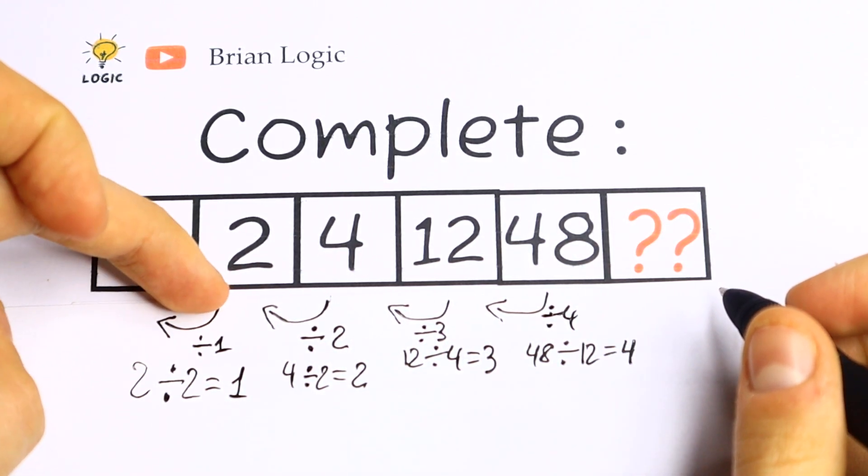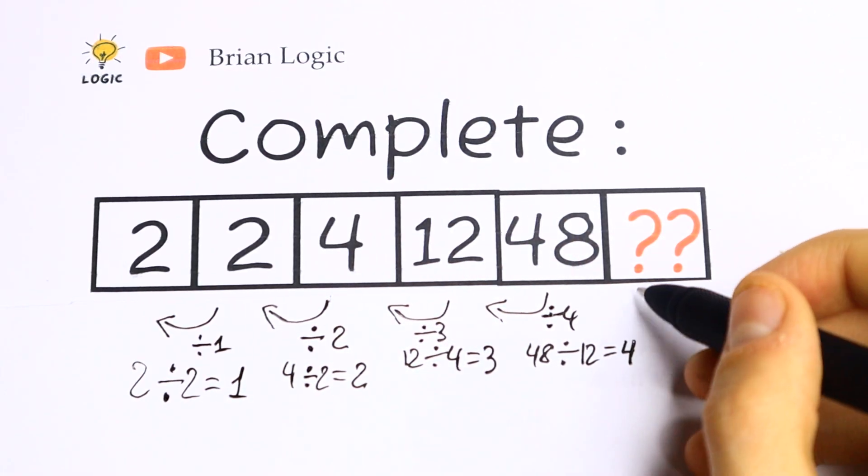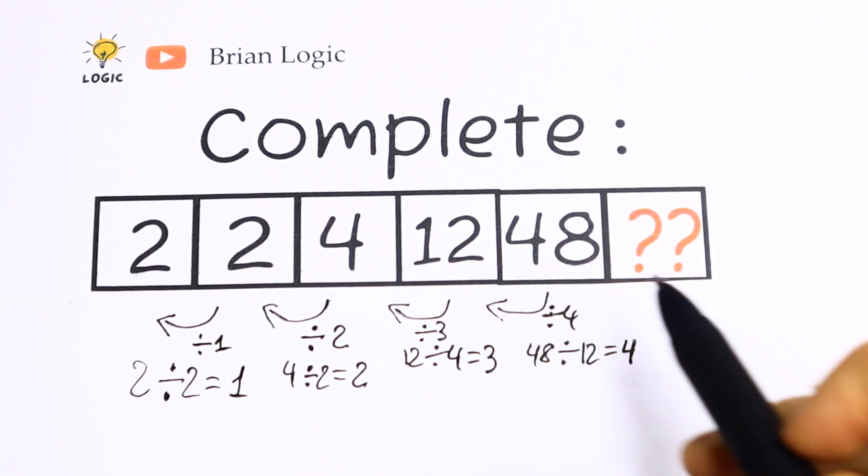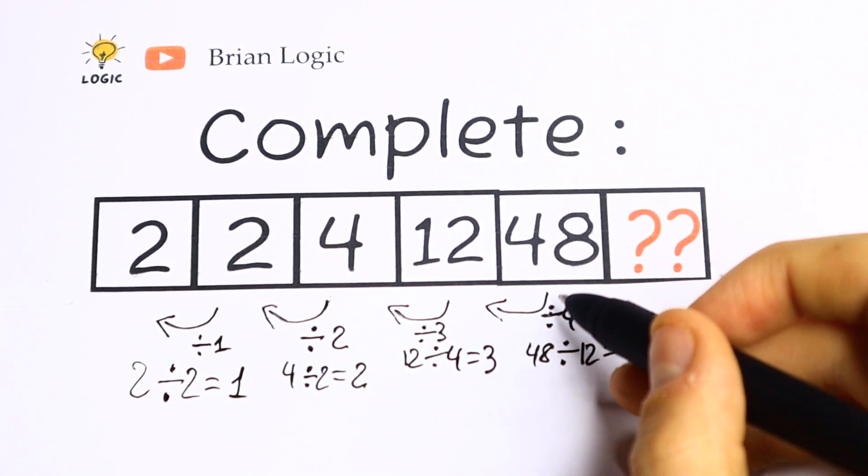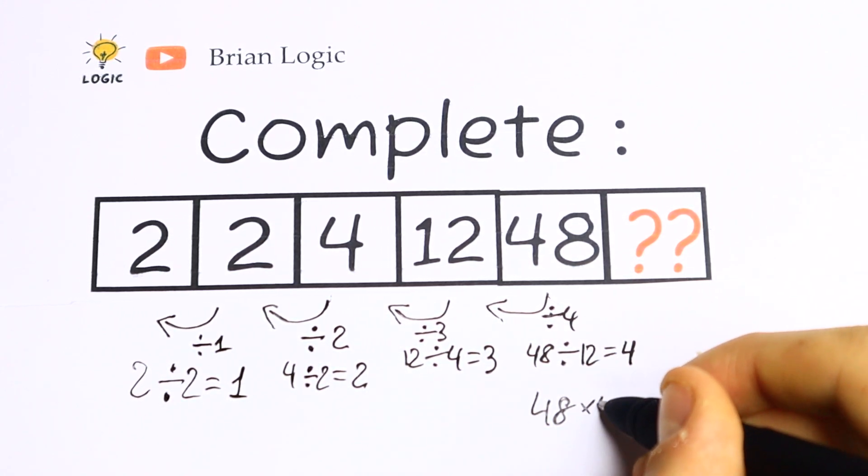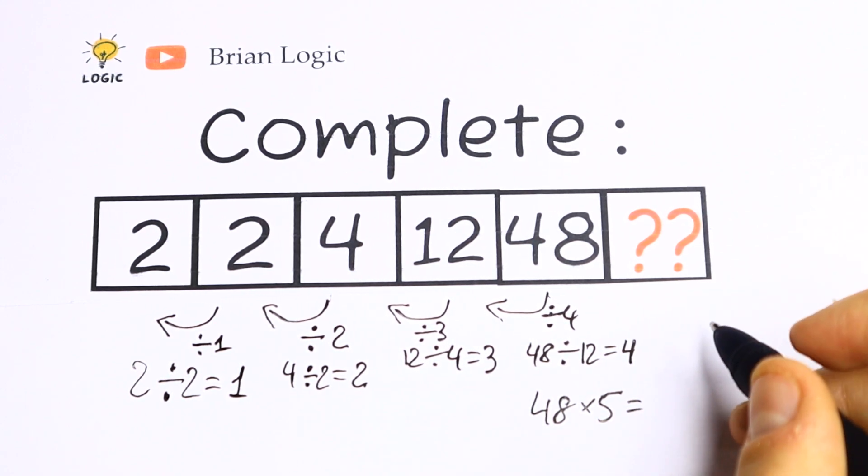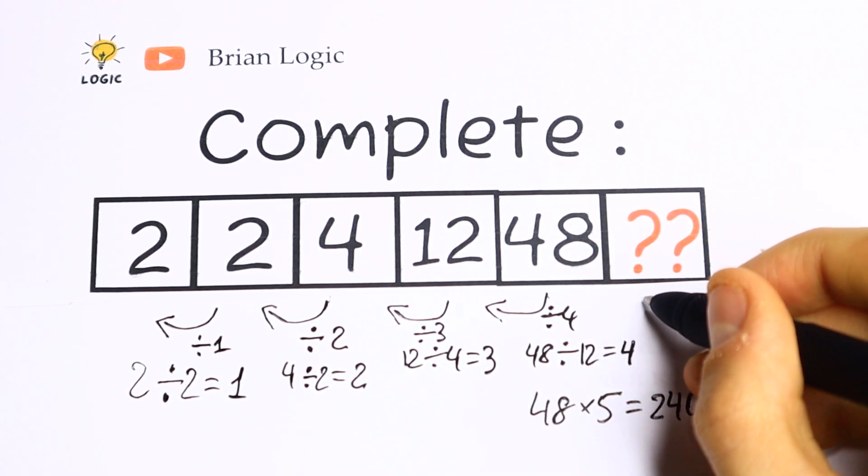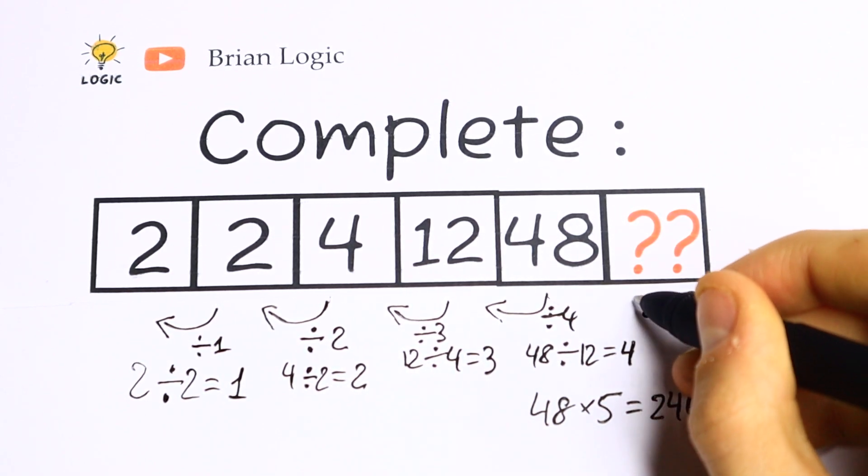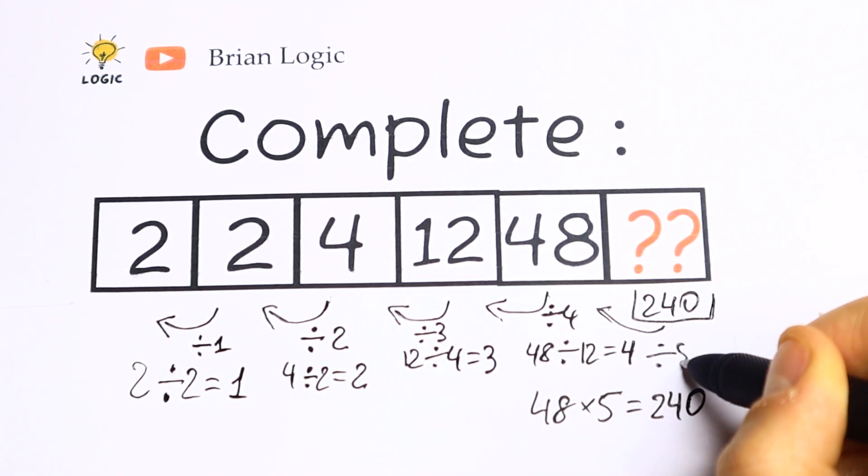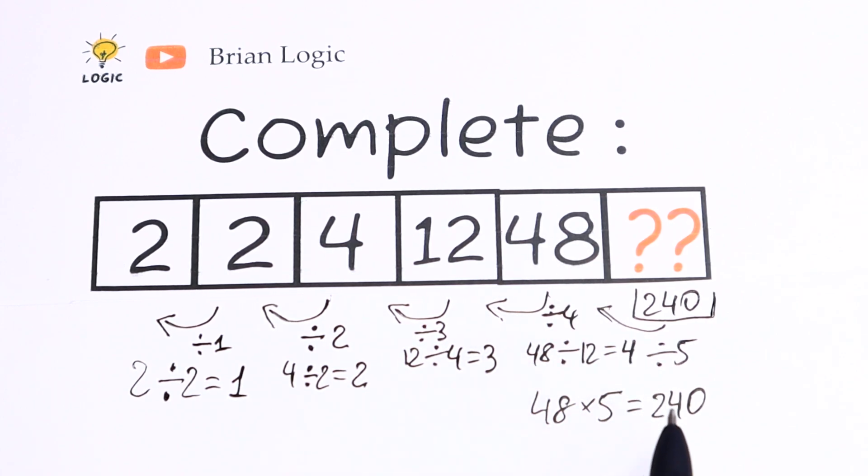We're dividing by 1, by 2, by 3, by 4, and we need to find the last number. This number we need to divide by 5 to get 48. So we need to multiply 48 times 5, which gives us 240. We can verify by dividing 240 by 5 to get 48. So our answer is 240.